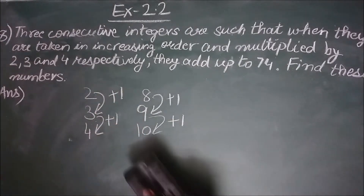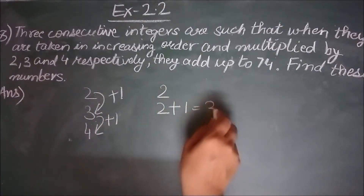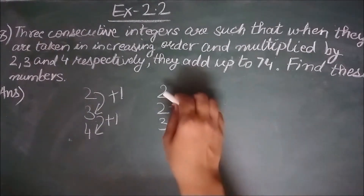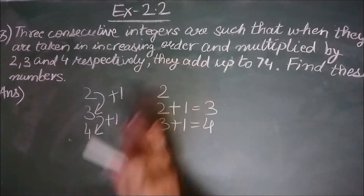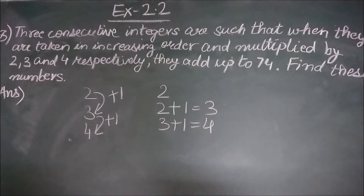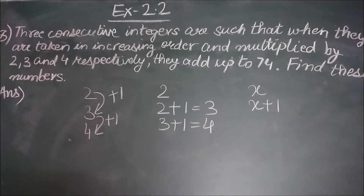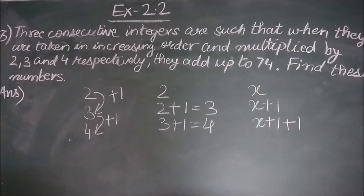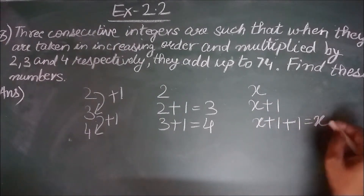In the question, we do not know which the first integer is, so I will assume it is x. Adding 1 to x gives the second consecutive integer x+1, and adding 1 to x+1 gives the third consecutive integer x+2. So the three consecutive integers are x, x+1 and x+2.